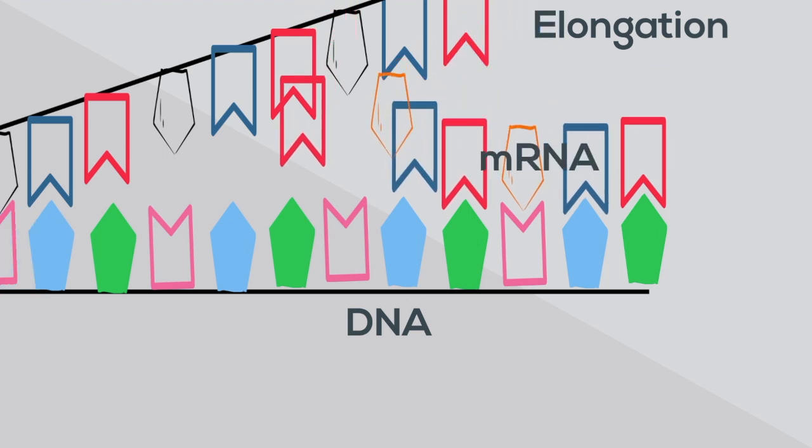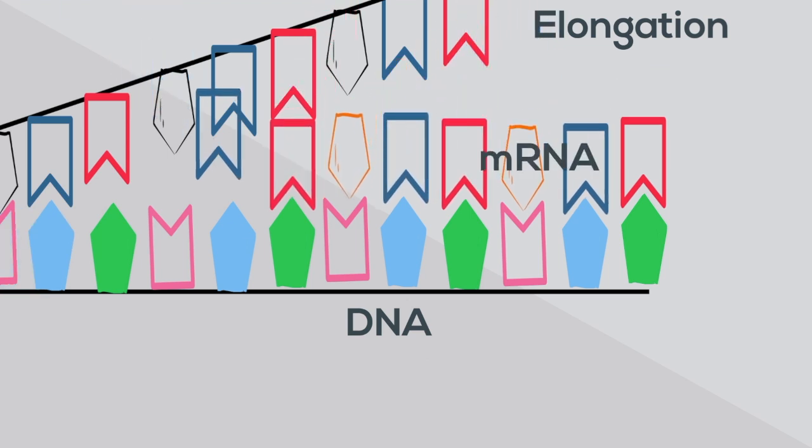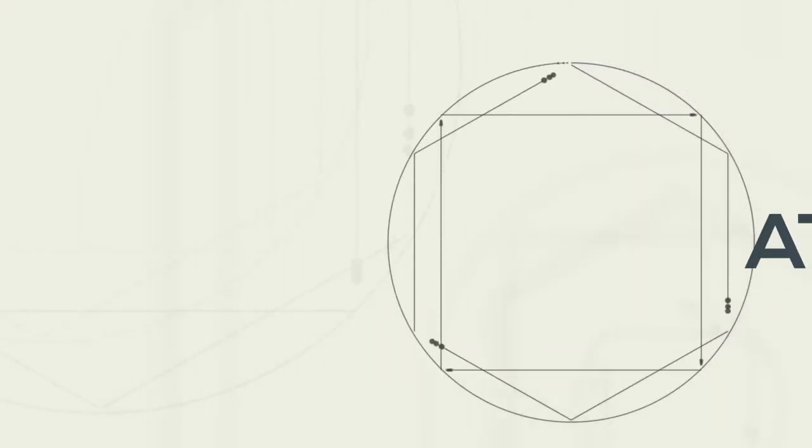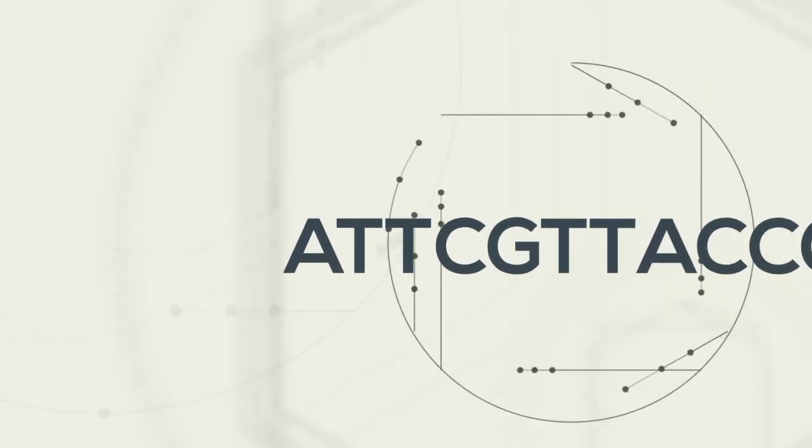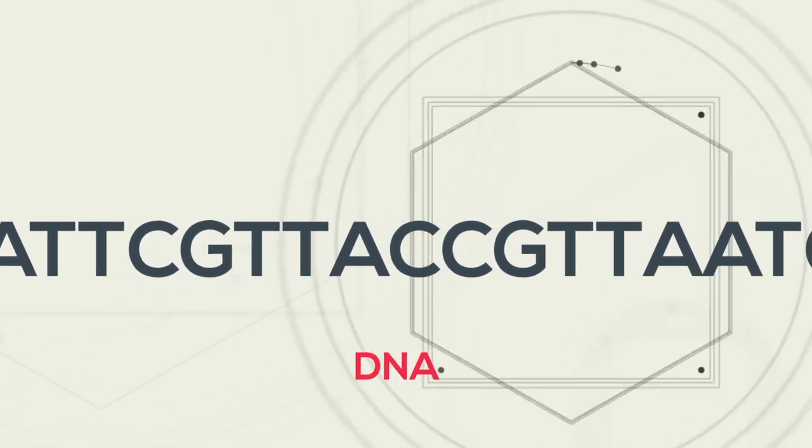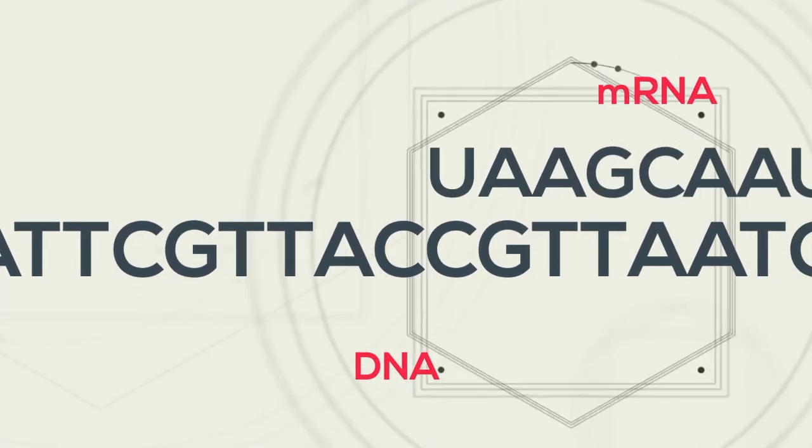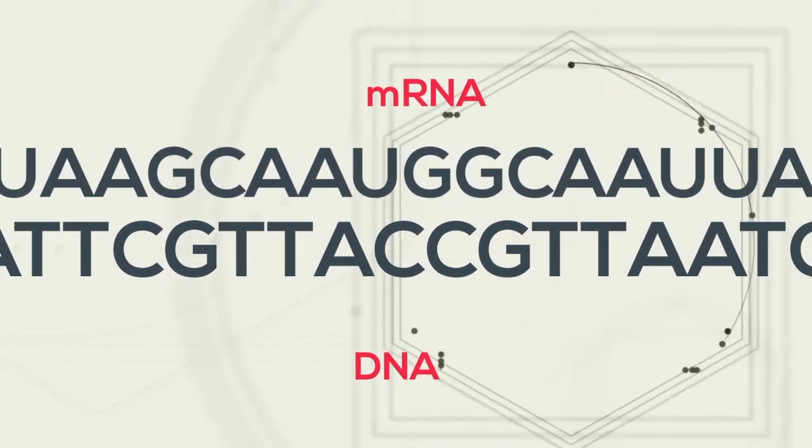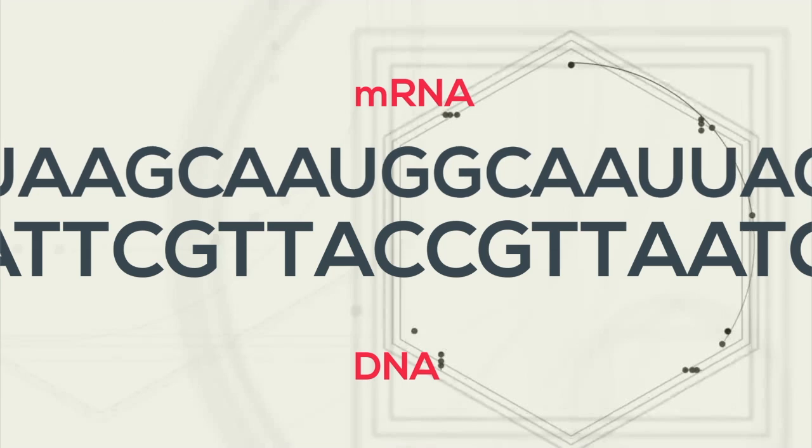RNA is similar to DNA but does not contain thymine but instead contains uracil. If you have this strand of DNA, messenger RNA or mRNA for short would pair up like this. Notice that the adenine pairs up with the uracil.